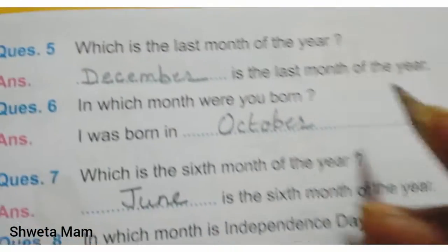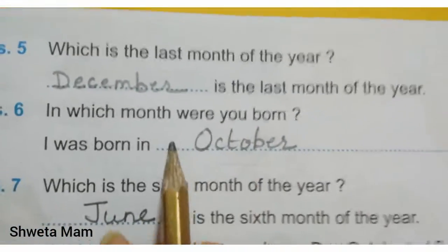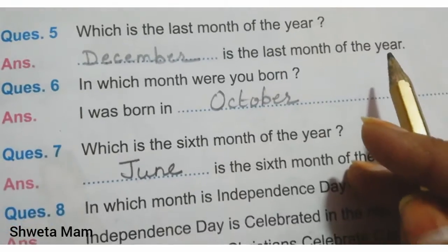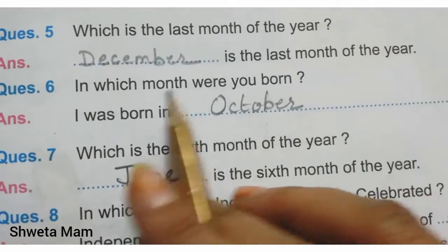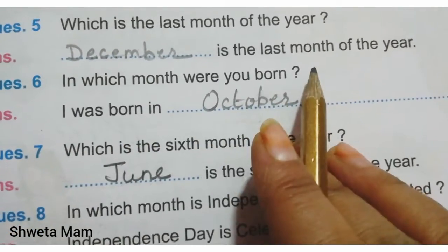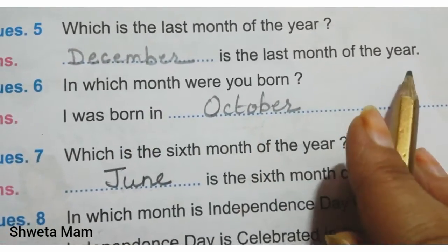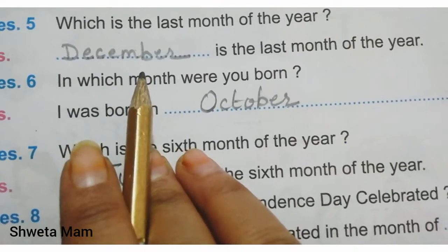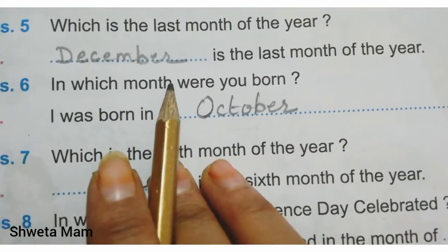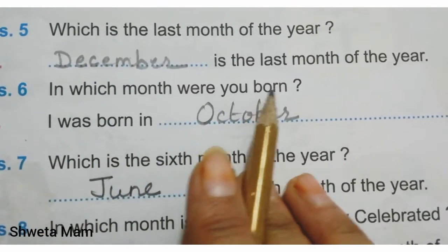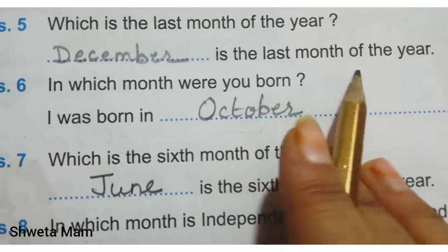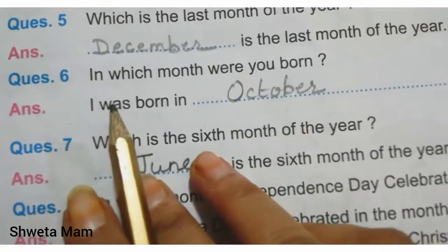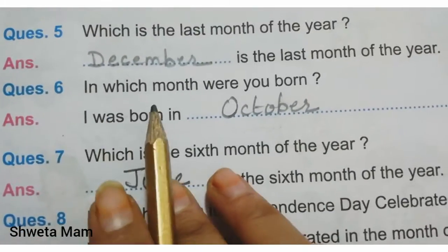Now question number 5: Which is the last month of the year? December, D-E-C-E-M-B-E-R. December is the last month of the year.